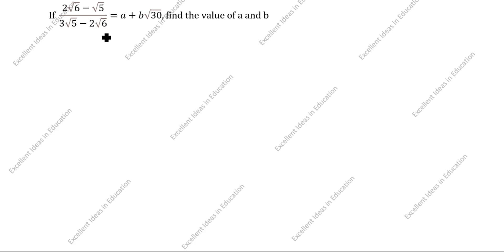Hi friends, welcome to my channel Excellent Ideas in Education. Today we are going to learn about a real numbers problem. If 2 root 6 minus root 5, divided by 3 root 5 minus 2 root 6, equals a plus b root 13, find the value of a and b.